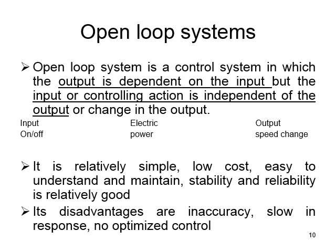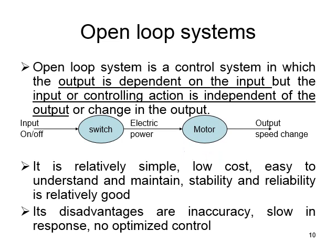For example, you have an input switch that is on and off, then an output which is speed change, and electric power is the process. The switch is there, electric power is given, the motor is there, and you get the output speed change. This is an open loop system.